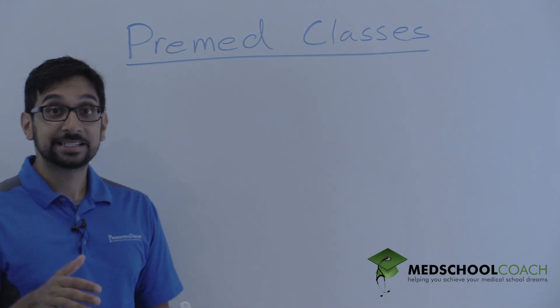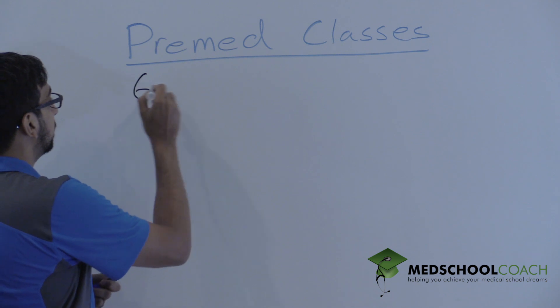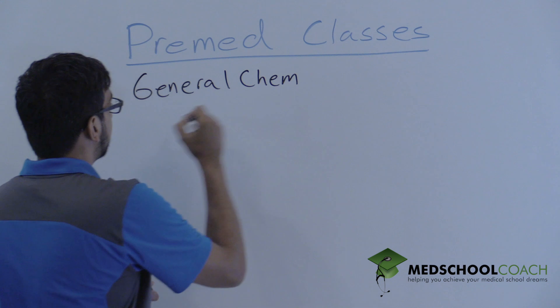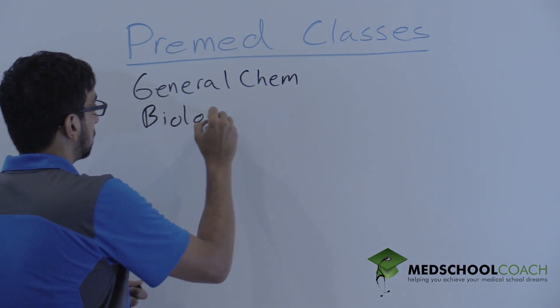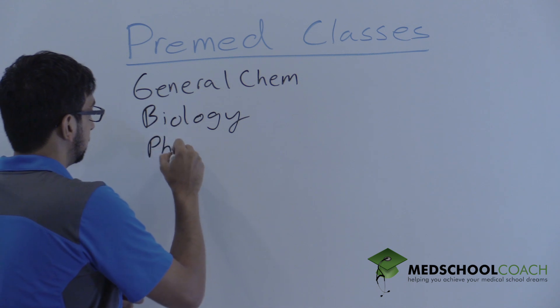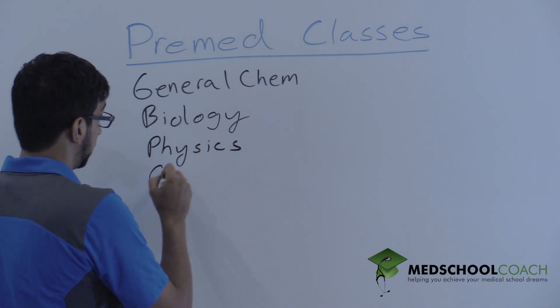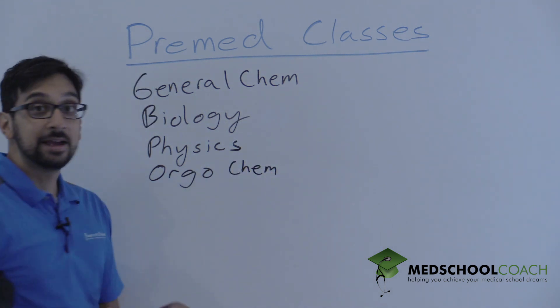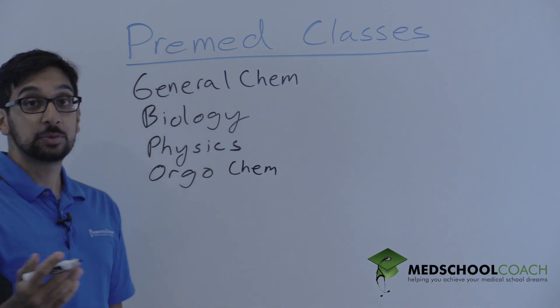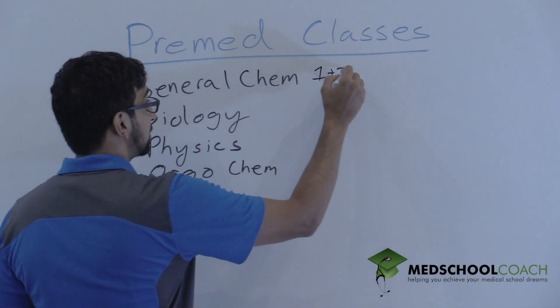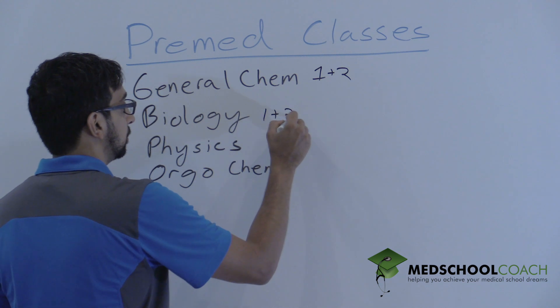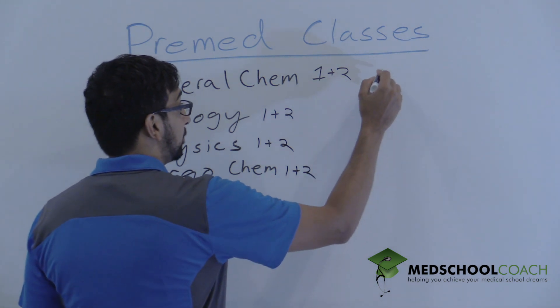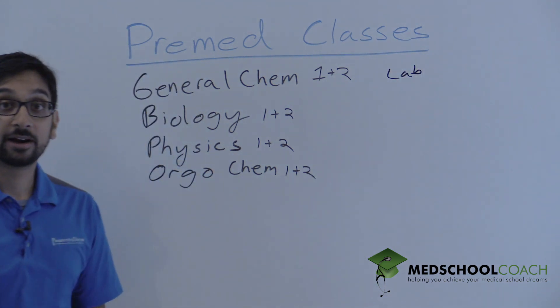Now you guys know the basic pre-med curriculum. It consists of general chemistry, biology, physics, and orgo, the dreaded orgo, as the basic prerequisites. Now you probably also know that all of these typically are two semesters, one plus two, and these are all required. And then they all have a lab component, all required as well.